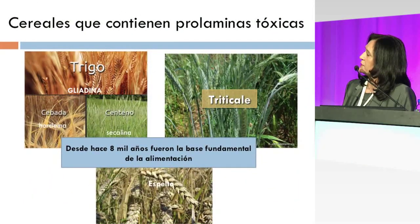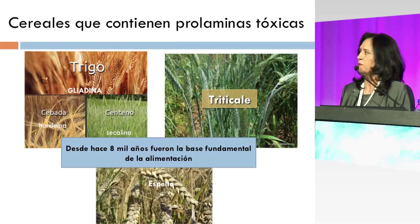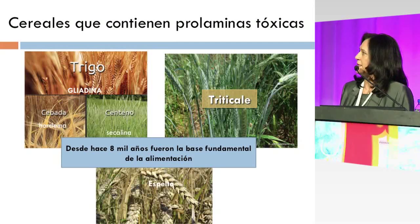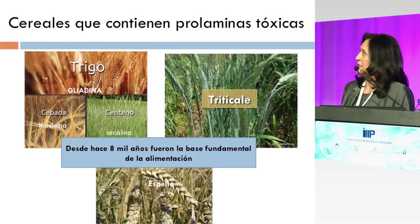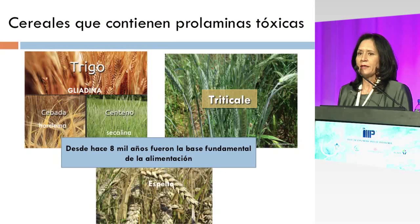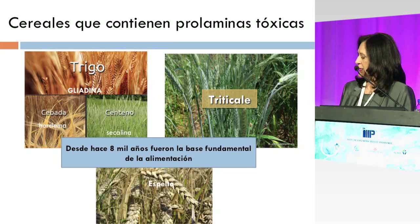¿Cuáles son las prolaminas que son tóxicas para los individuos? Para el trigo ya comentábamos que es la gliadina, para el centeno la cecalina, en el caso de la cebada la ordeína, pero tenemos también el triticale y espelta que son también productos que pueden tener proteínas tóxicas para los individuos.